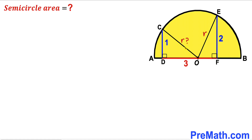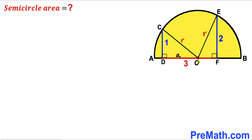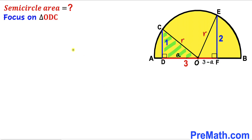Now we assume that segment DO is labeled lowercase a. We know the whole segment DF is three units, so therefore the remaining segment OF is going to be three minus a.